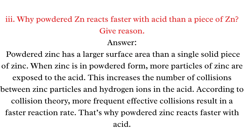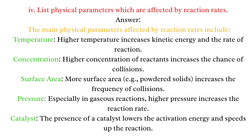Q3: Why does powdered zinc react faster with acid than a piece of zinc? Answer: Powdered zinc has a larger surface area than a solid piece. More particles of zinc are exposed to the acid, increasing collisions between zinc particles and hydrogen ions. According to collision theory, more frequent effective collisions result in a faster reaction rate.